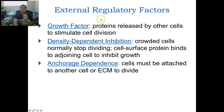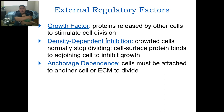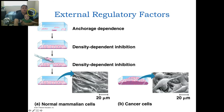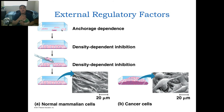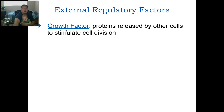Growth factors are proteins released by other cells to stimulate cell division. Density-dependent inhibition means cells that are too crowded stop dividing. Anchorage dependence means cells have to be attached to another cell or extracellular matrix to divide — they won't grow unless they find a buddy next to them. Cancer cells don't follow these rules: they grow without anchorage dependence and without density dependence, so even when crowded they still grow.